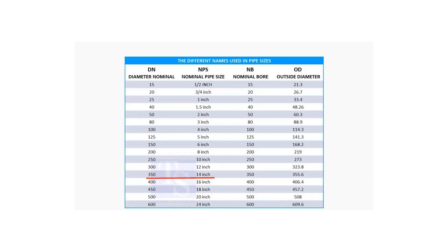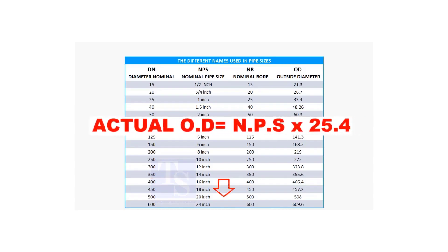For 14 inch and above, multiply the inch size by 25.4 to obtain the actual OD of the pipe.